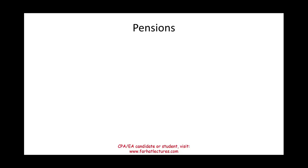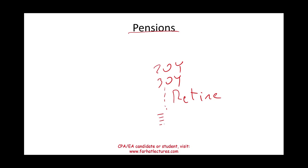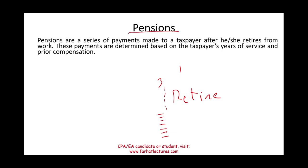Welcome to this session on the taxability of pensions and annuities. A pension is a retirement benefit where, after working for a company for 20 or 30 years, the company keeps making payments to you after you retire. Pensions are still common for governmental jobs — police officers, firefighters, and teachers still have pensions as a retirement option. Pensions are a series of payments made to the taxpayer after he or she retires.